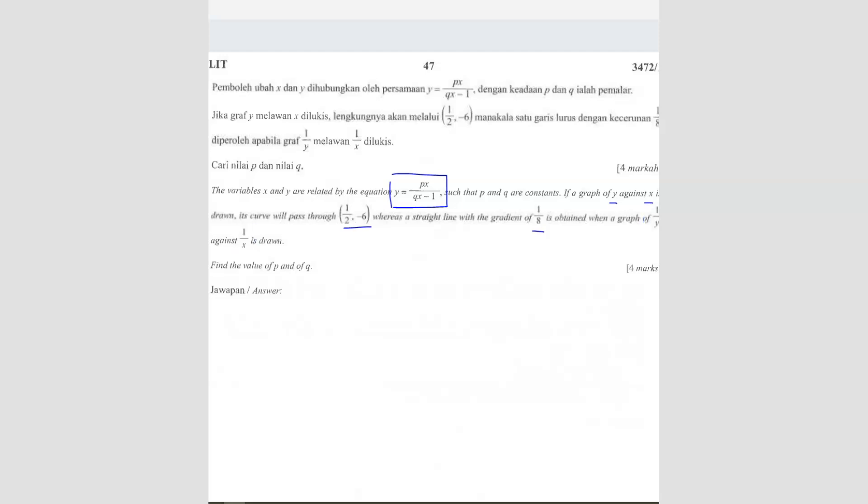So you've got two equations here. Two straight line equations. The first one is in terms of y against x. The other one is in terms of 1 over y against 1 over x. So we're going to do the first part. Because y against x, we can straight away use this equation.